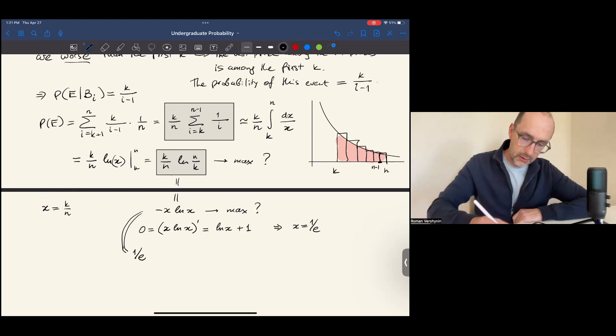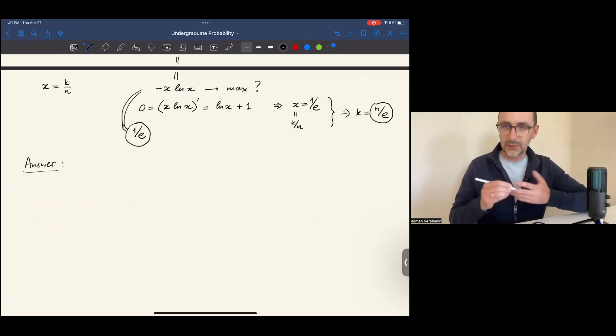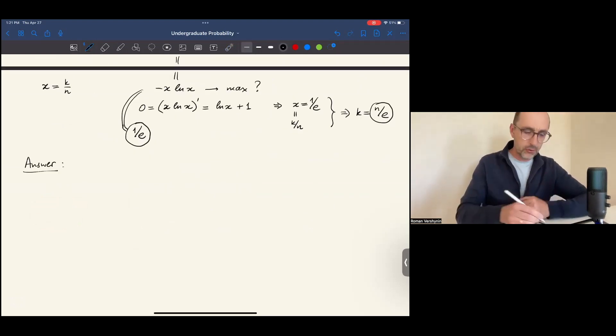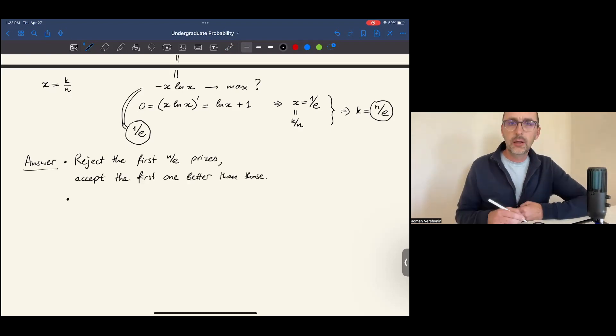Now remember, x was k over n. So from this, we get that the optimal value of k is n over e, and the optimal probability is 1 over e. So our answer to the secretary problem is the following strategy: reject the first n over e prizes, or the 1 over e fraction of prizes, then accept the first price that's better than those. The probability that we will get the best price with this strategy is 1 over e, approximately.